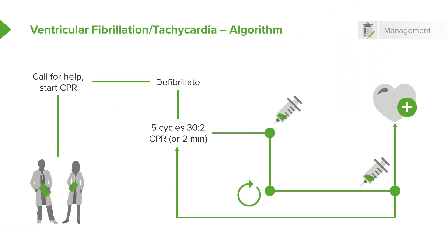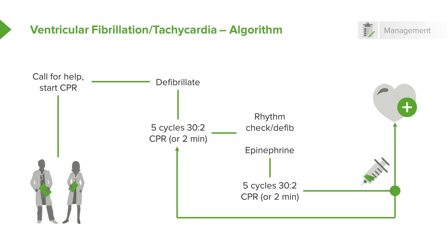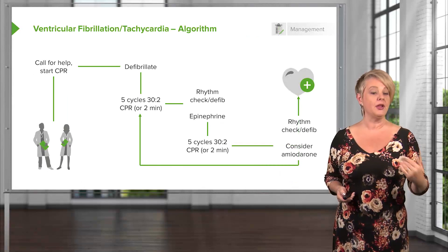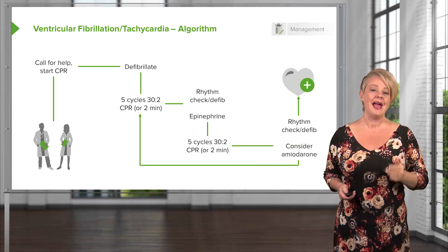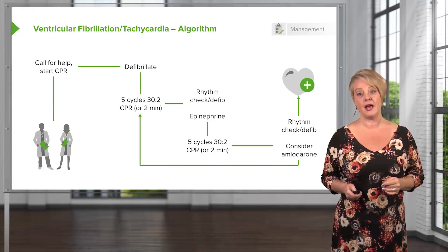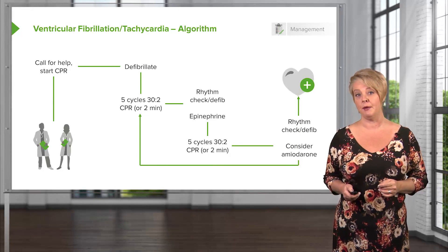Your next maneuver is to continue CPR for five cycles or two minutes before performing another rhythm check. At that point, if you're still in a shockable rhythm, you administer another shock, and this is also when you give a vasopressor drug like epinephrine. After that, continue CPR for another five cycles or two minutes, check the rhythm again, defibrillate if still in a shockable rhythm, and now think about antiarrhythmic drugs — in particular amiodarone.